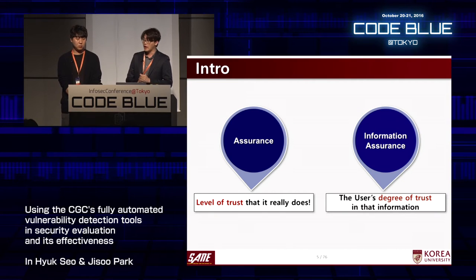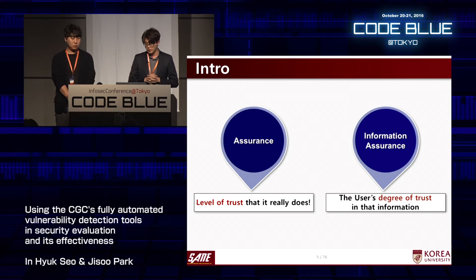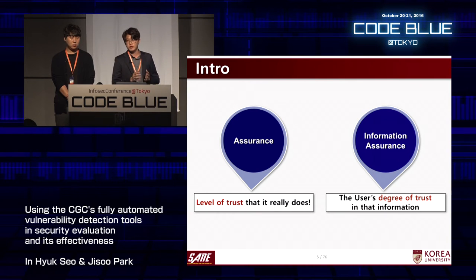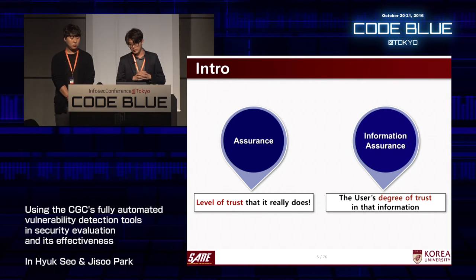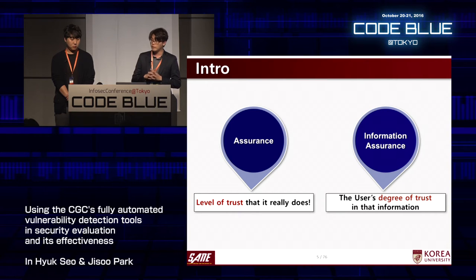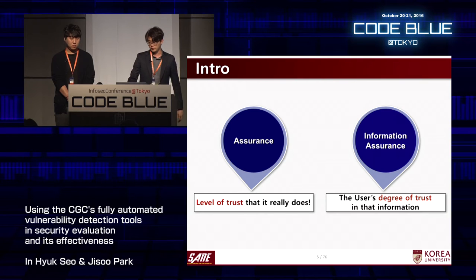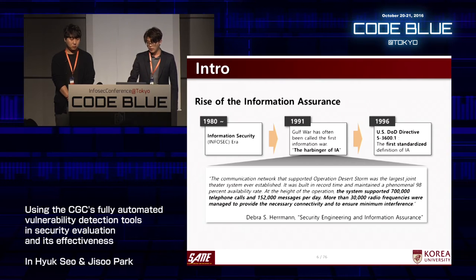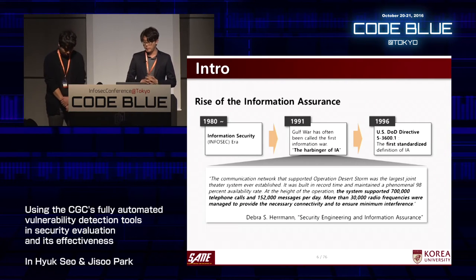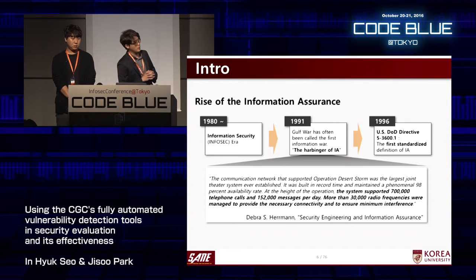First, I think it's useful to form a consensus for better understanding of my presentation. Assurance means the level of trust. Information assurance means the degree of trust in the information. I want to talk about the background — the rise of information assurance.